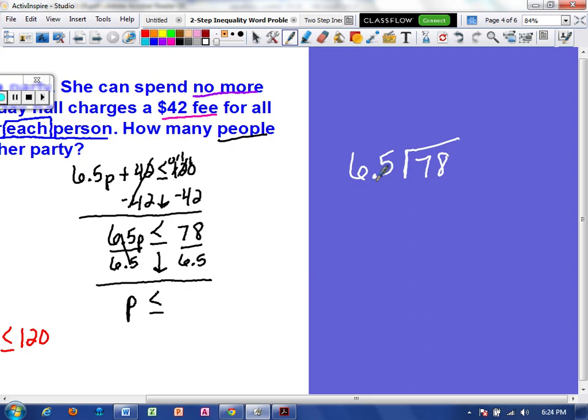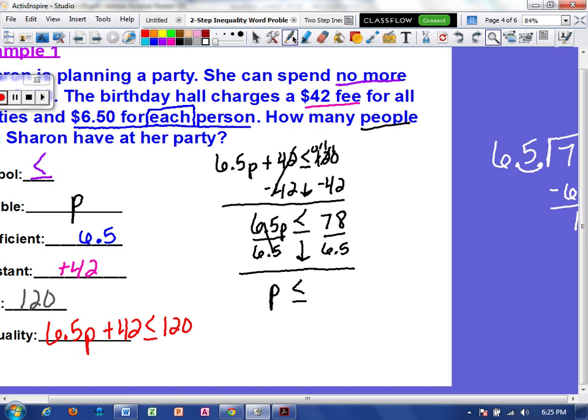So in your notes, you may want to write this out to the side. Alright, if there's a decimal outside, we have to move it to make it look like a whole number. So we'll do the same thing inside. 65 goes into 78 one time. We get a remainder of 13. And 65 goes into 130 two times.